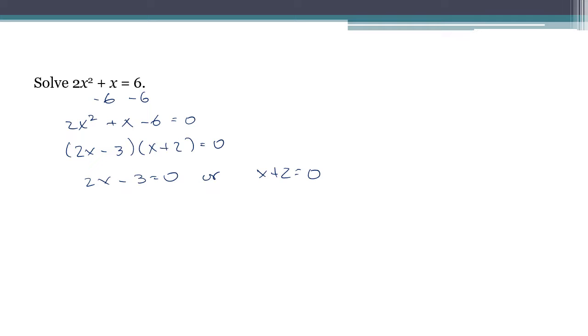Either 2x minus 3 equals zero, or x plus 2 equals zero. The second one is the easier of the two. Just subtract 2 from both sides, and there's one answer. Over here, I'll add 3 to both sides, and then divide both sides by 2. And once again, I get two answers, which is evidently a fairly common thing here.